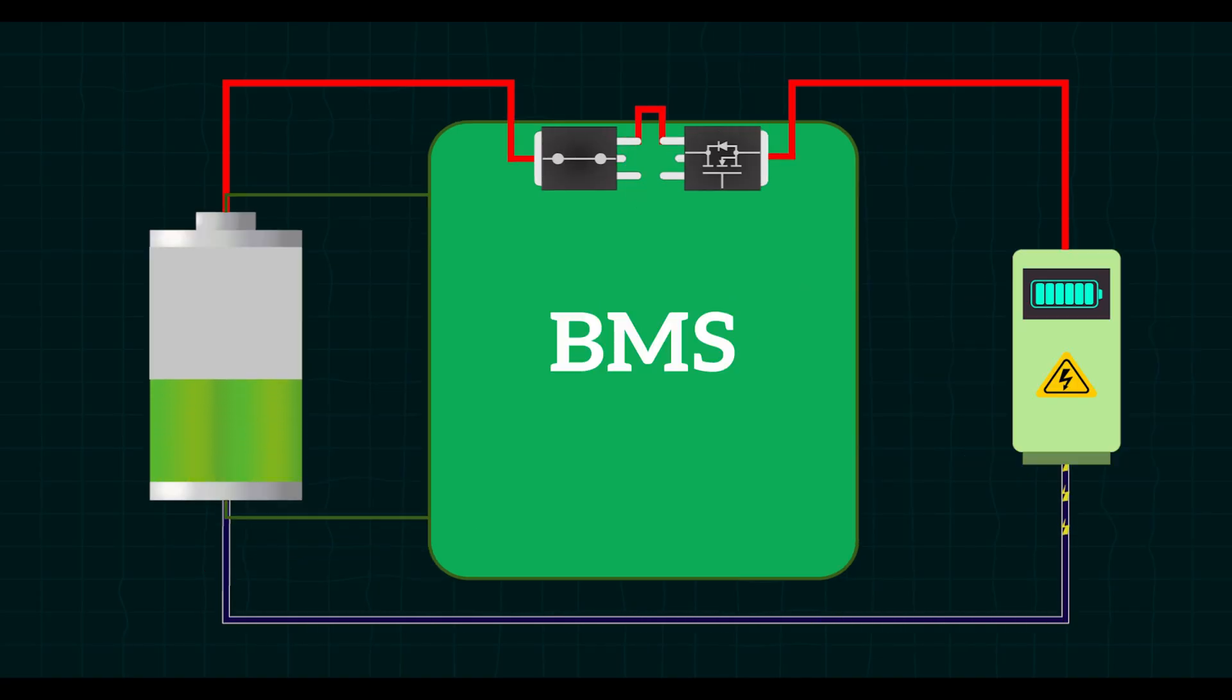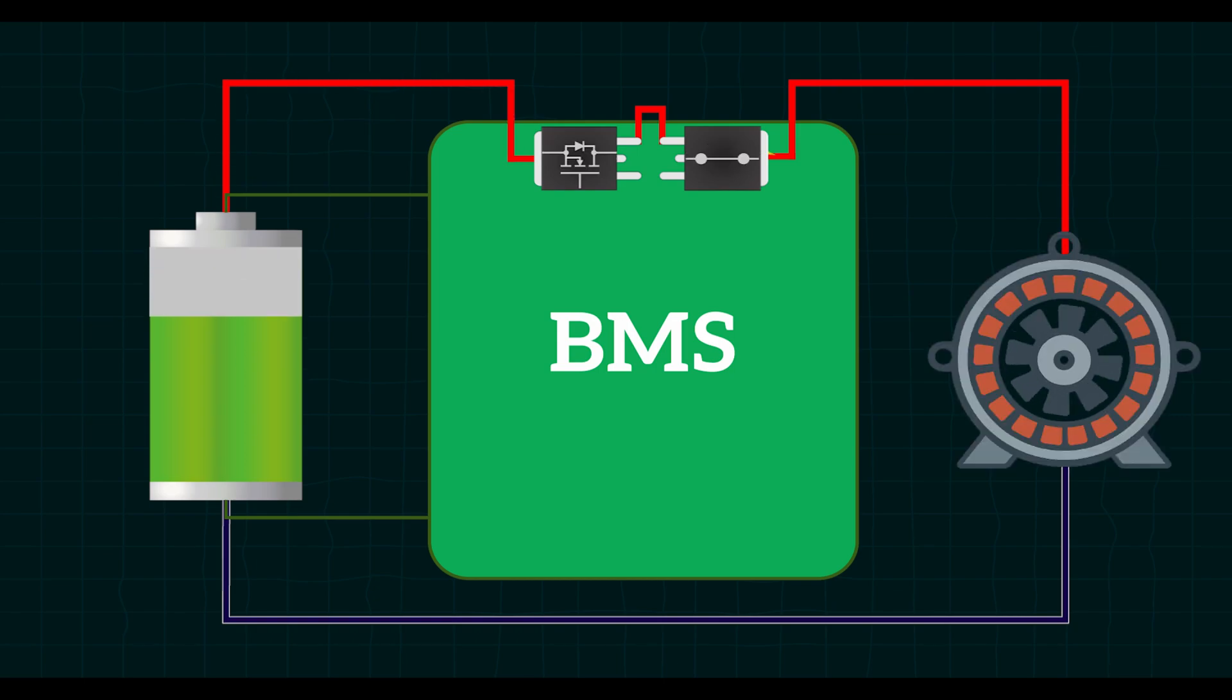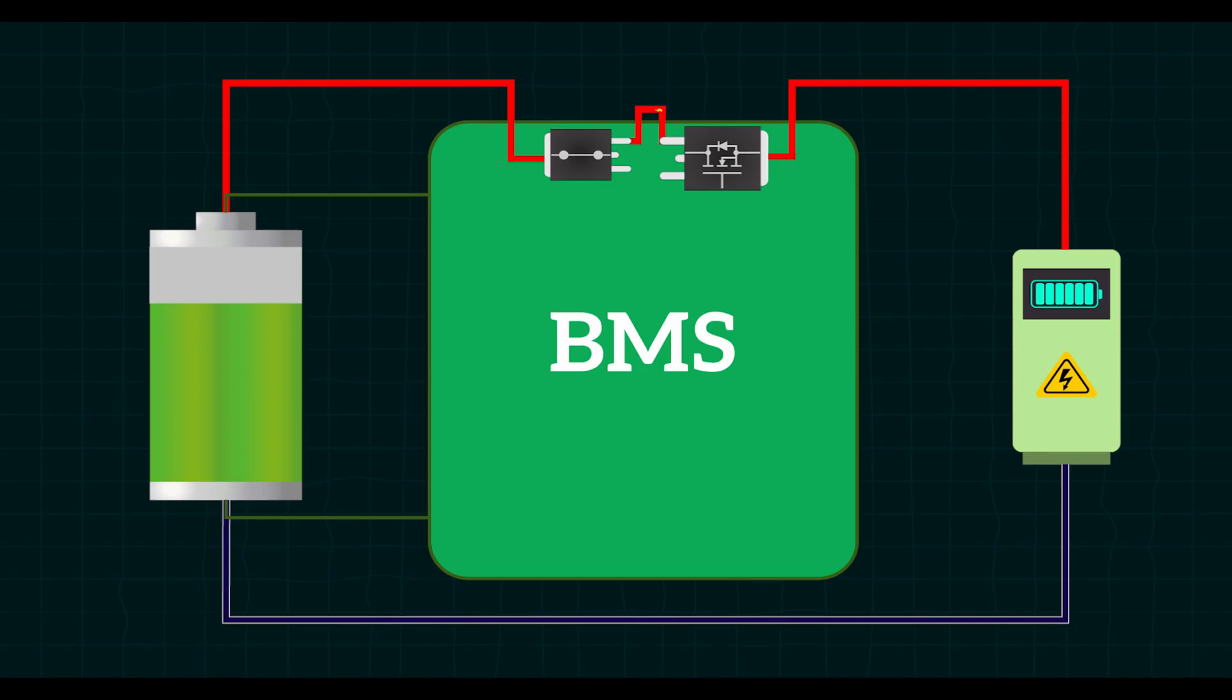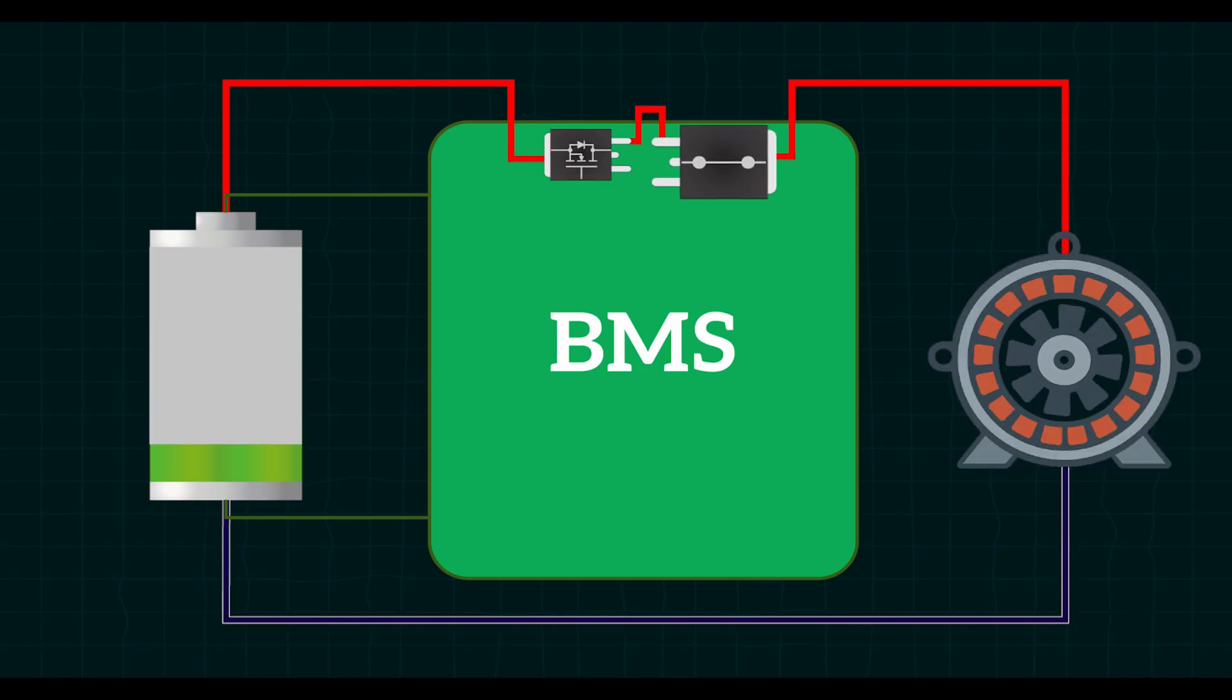Sometimes it's smart to use separate MOSFETs for charging and discharging. Why? Because the current levels are different. Charging usually needs less current and discharging needs more. So we can use smaller, cheaper MOSFETs for charging and stronger, bigger ones for discharging. This saves money and improves efficiency. But here's something to watch out for. Each MOSFET has a body diode. That diode can turn on in one direction and let current pass when it shouldn't. That's why we need extra components like diodes or transistors to block unwanted current flow.